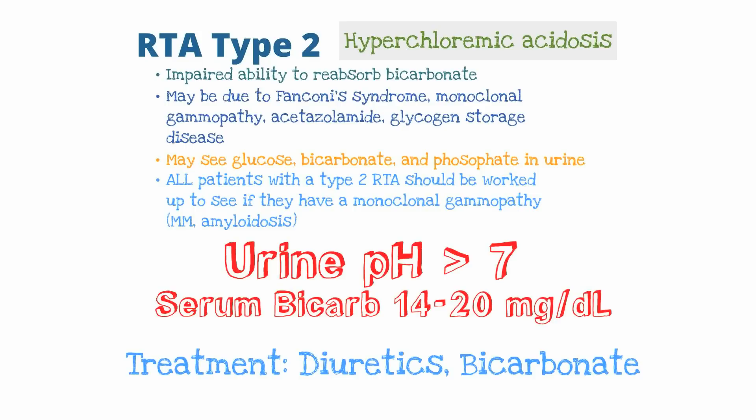In RTA type 2 you may see glucose, bicarbonate, and phosphate within the urine. All patients with RTA type 2 should be screened for a monoclonal gammopathy such as multiple myeloma or amyloidosis. Key findings include a urine pH greater than 7 and a serum bicarb of 14 to 20. The urine pH is high because bicarb cannot be reabsorbed and is lost in the urine, making it alkaline. Treatment includes diuretics as well as bicarbonate.